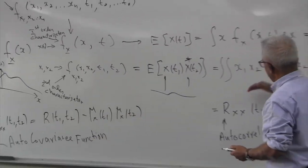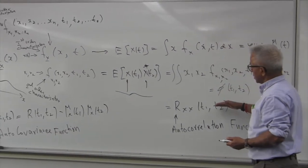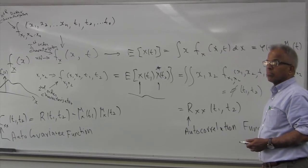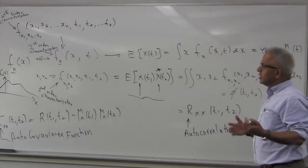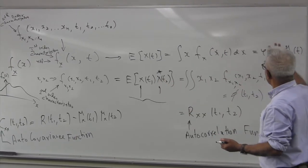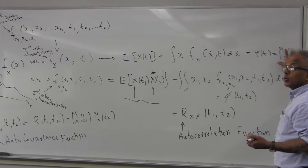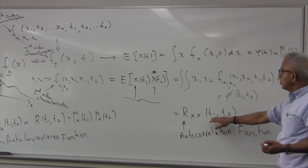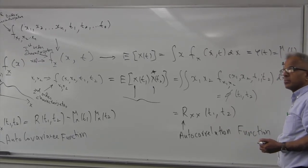You can either deal with the density functions, or you can deal with the mean function and the autocorrelation function. What we notice is that in general, for any stochastic process, the mean could be a function of time, and the autocorrelation could be a function of t1 and t2.